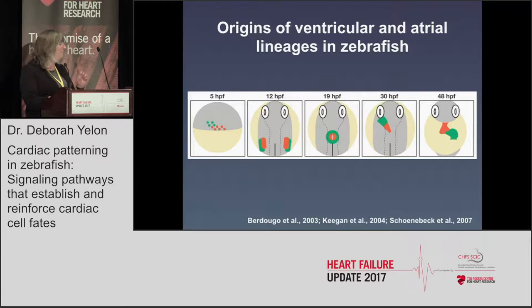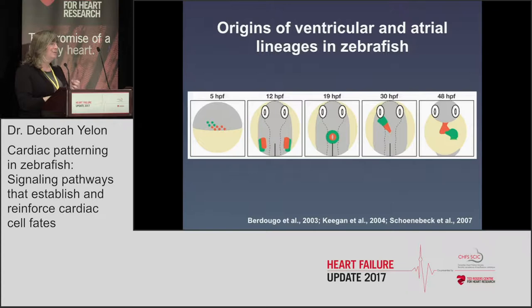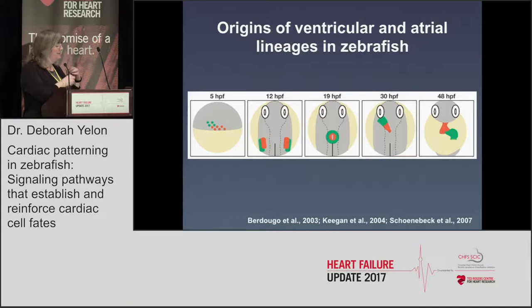What I want to emphasize today builds on that concept. Even though these cell types originate in distinct lineages very early on, it turns out that their differentiation is really not locked in at those early stages. The theme I want to emphasize is that these identities, while established early, need to be actively maintained over time. Even after we can see distinct ventricular and atrial cell types in the heart, there are still pathways that are active to keep those identities locked in.